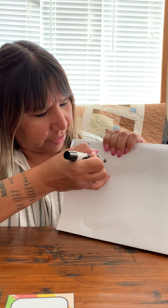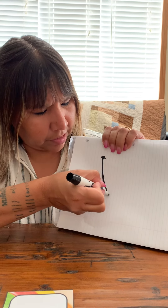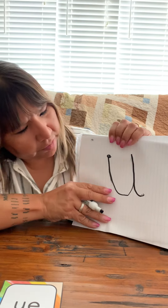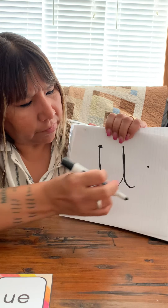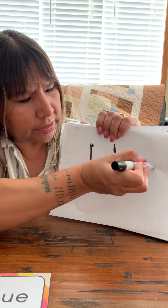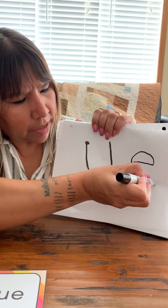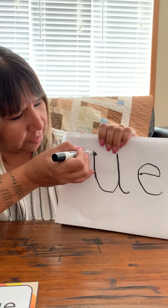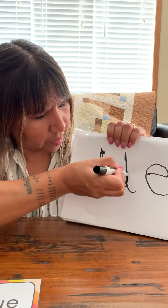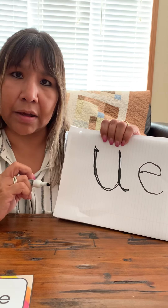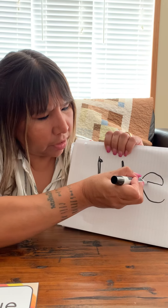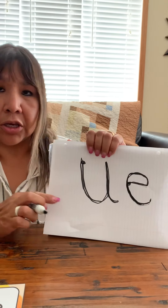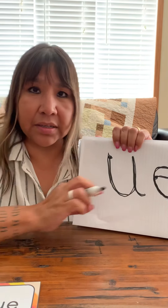Our letter today is U: down, up, down, and under with a little hooky tail. And E: we start kind of in the middle, go across, up, and down. Miss Leona is writing sideways so it's a little crooked, but: down, up, little baby tail — then down, up, around, and stop. U-E.